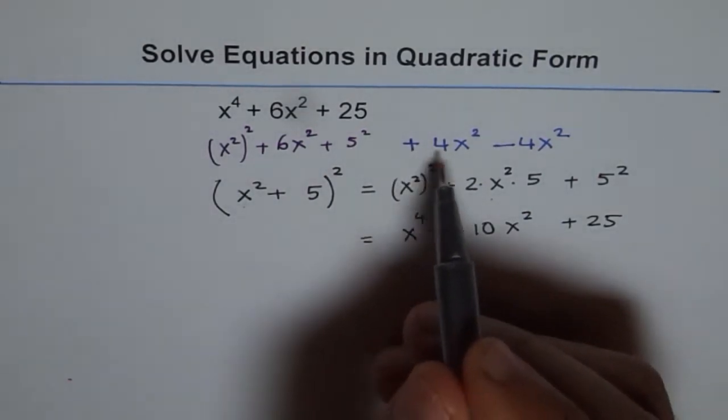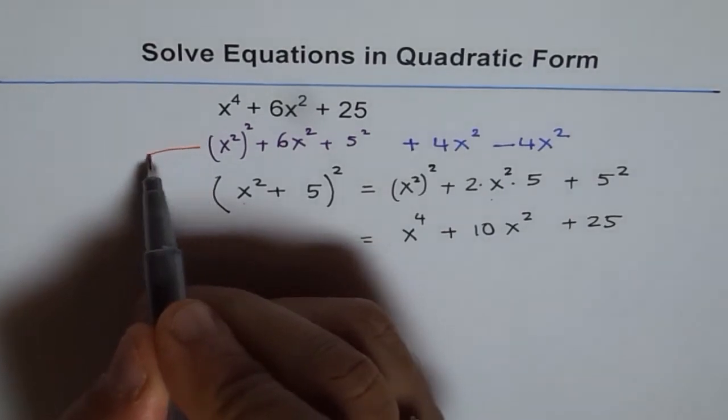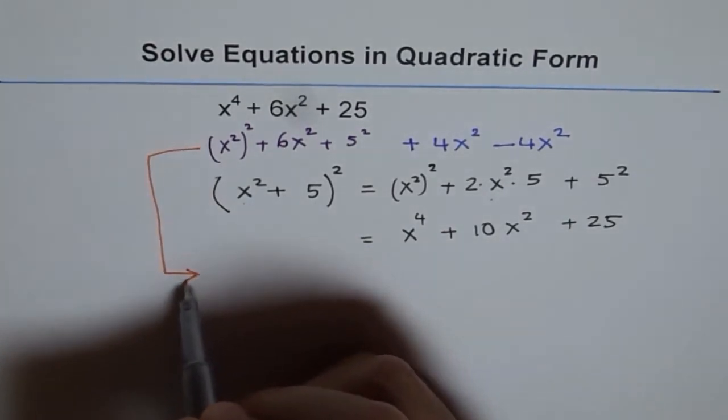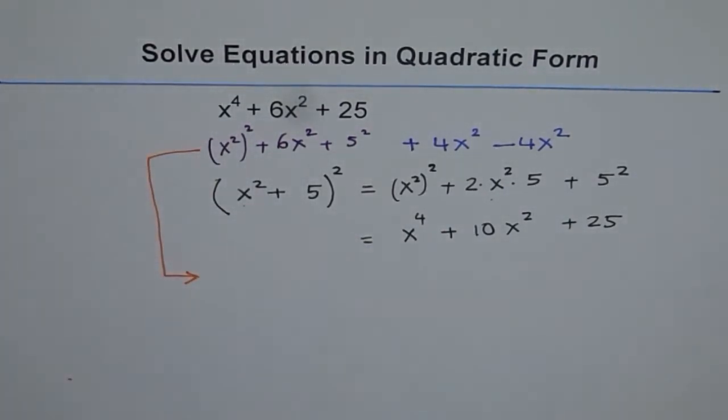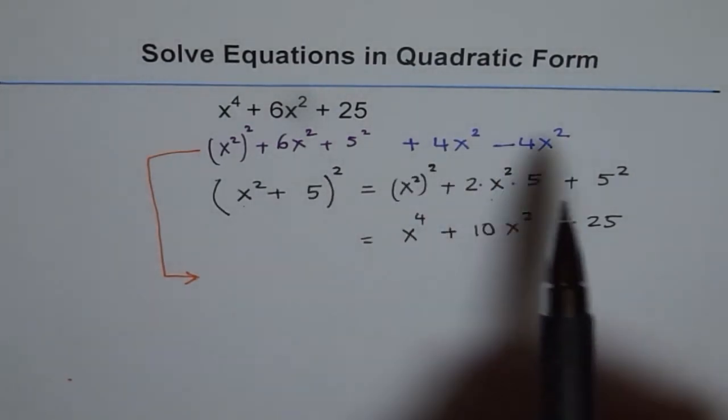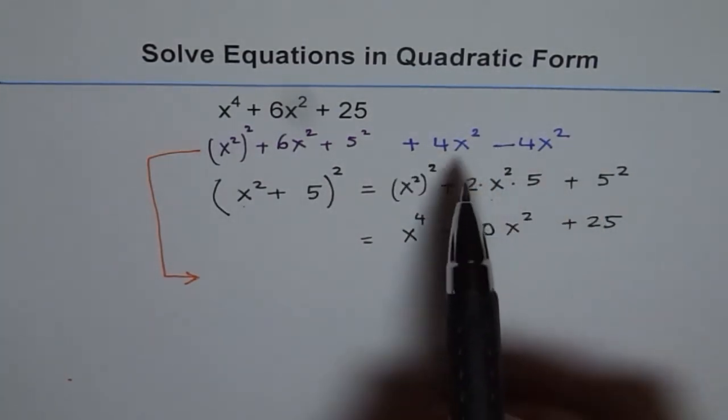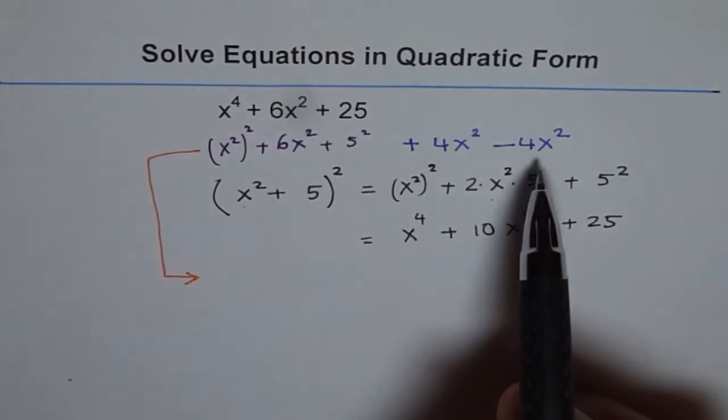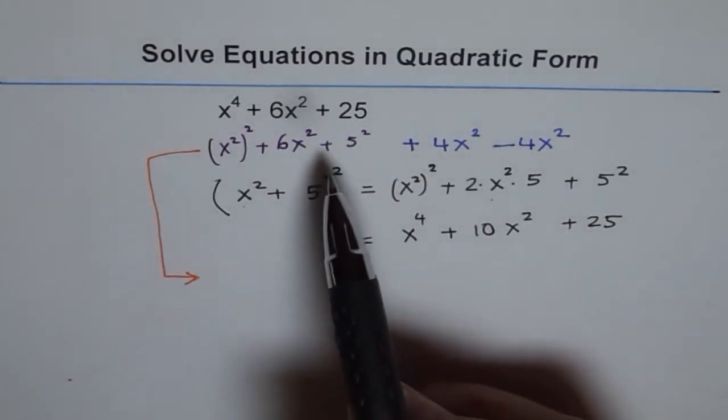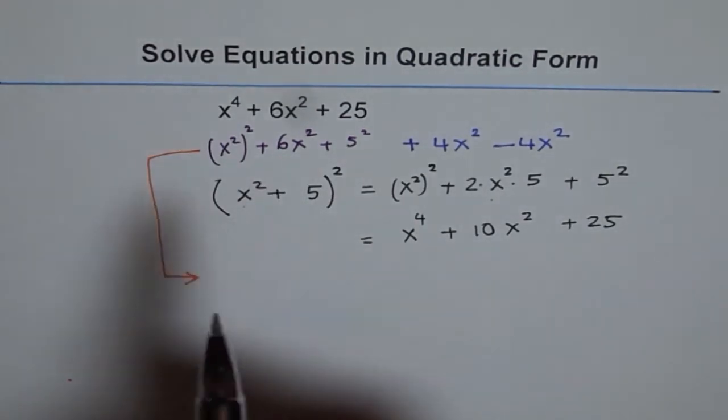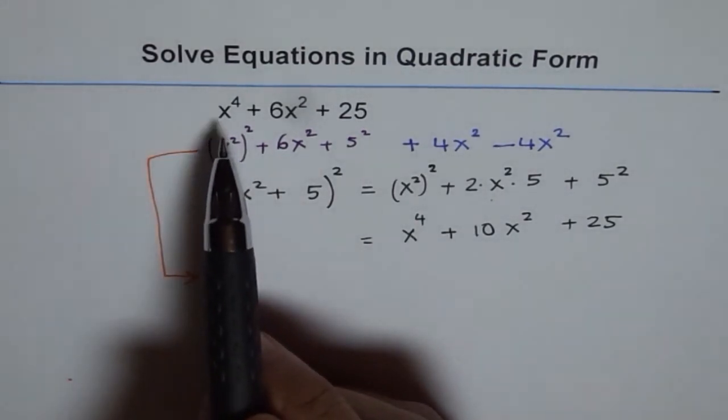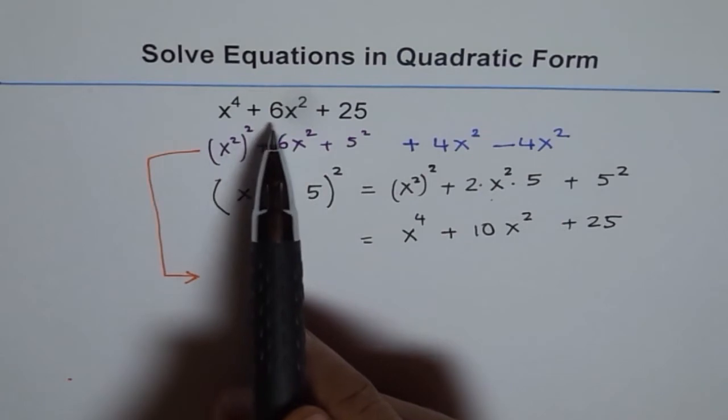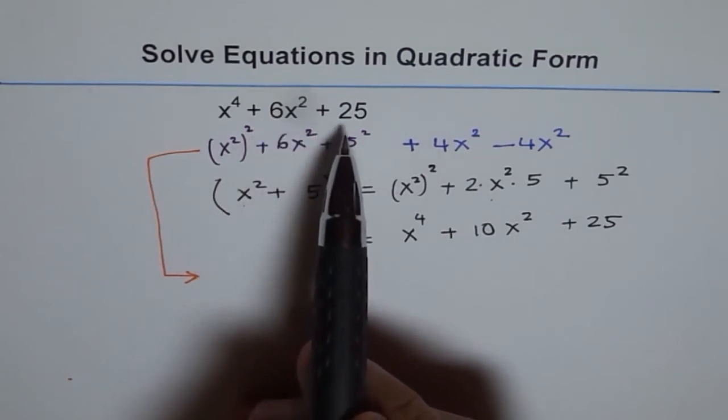From the original expression, which was x^4 + 6x^2 + 25. So to this expression, I added 4x^2 minus 4x^2. See how it gets transformed now. If I do this substitution, then this equation can be written as, so let me complete the factoring process now.